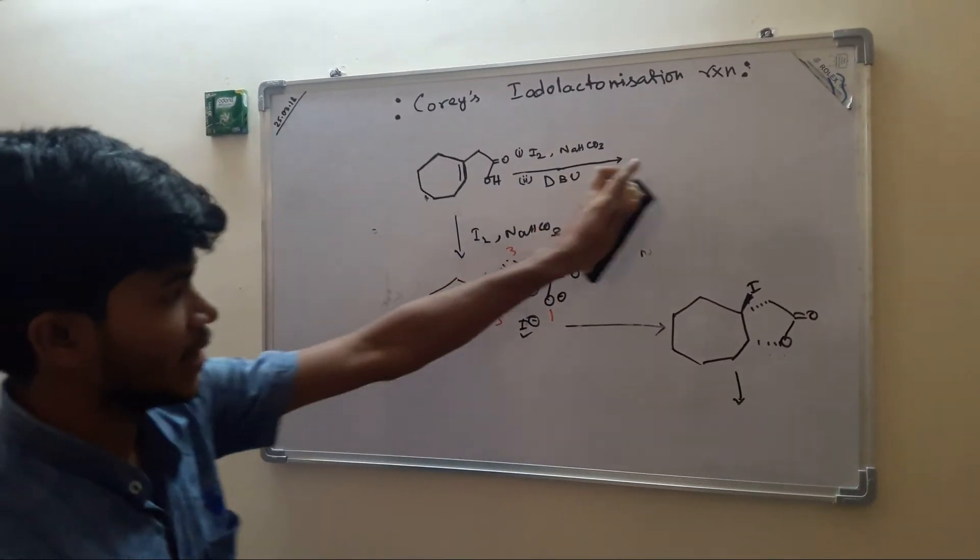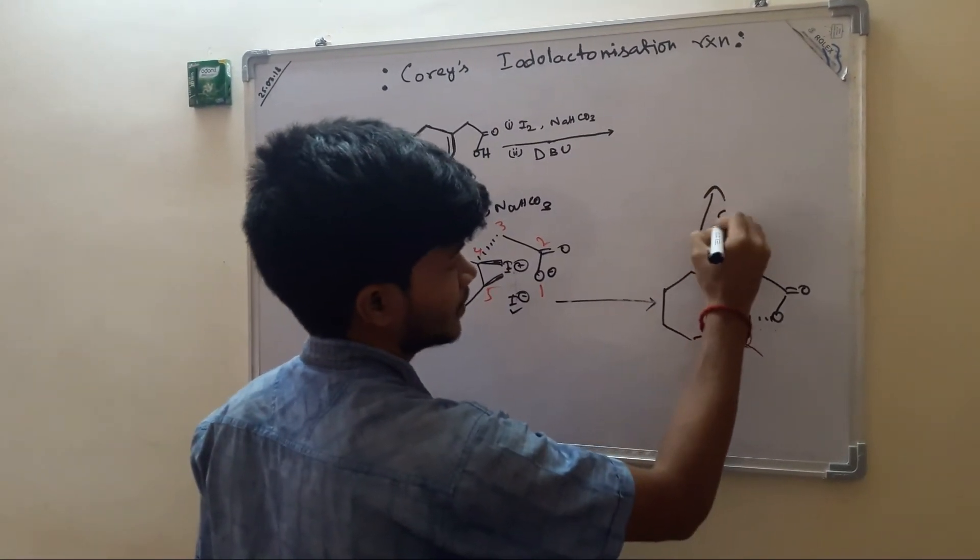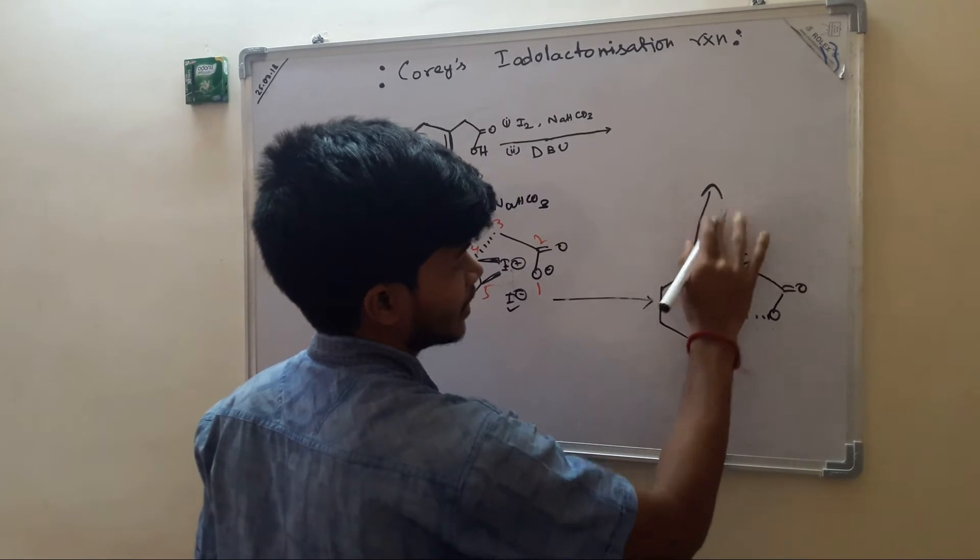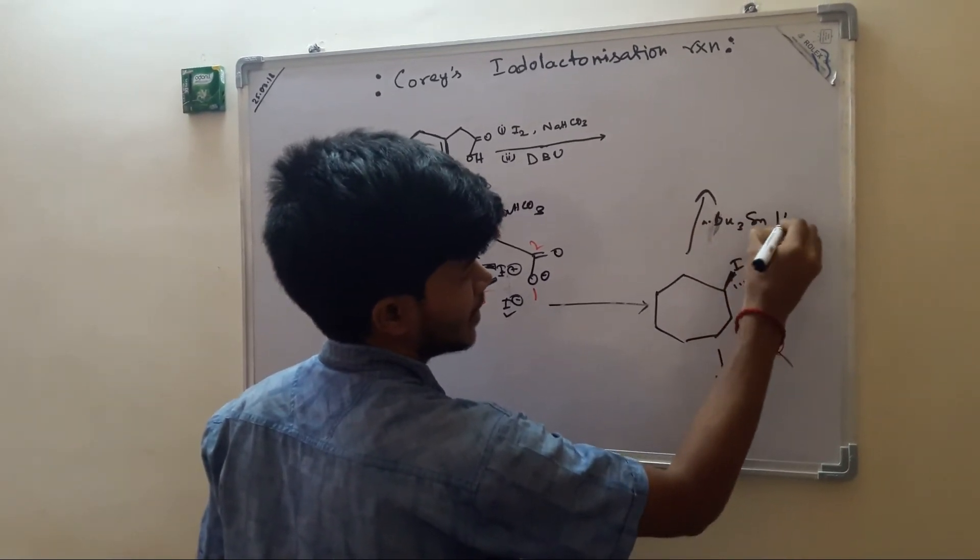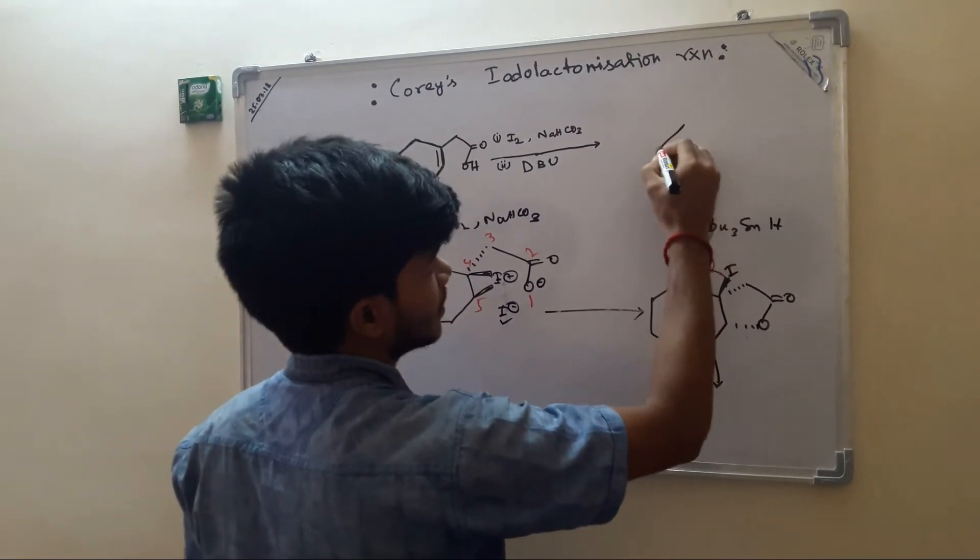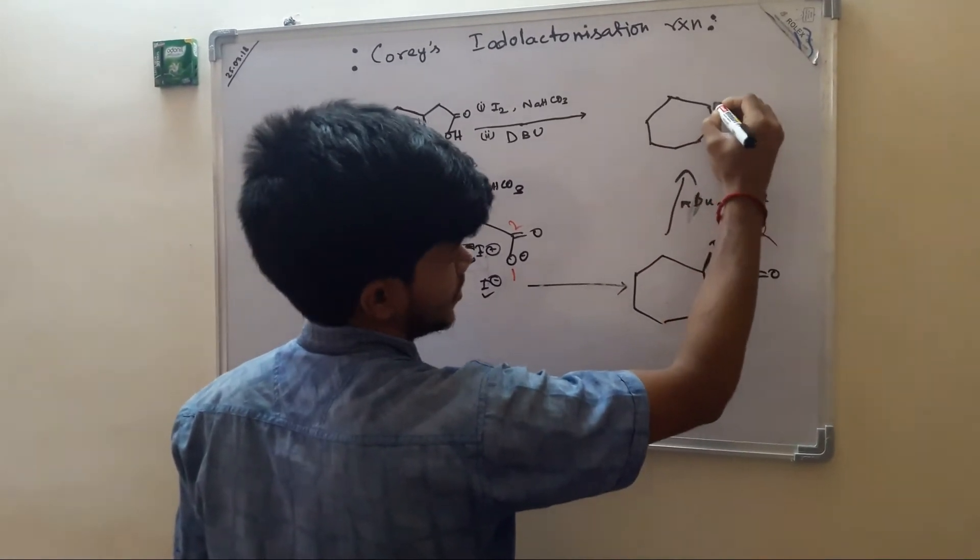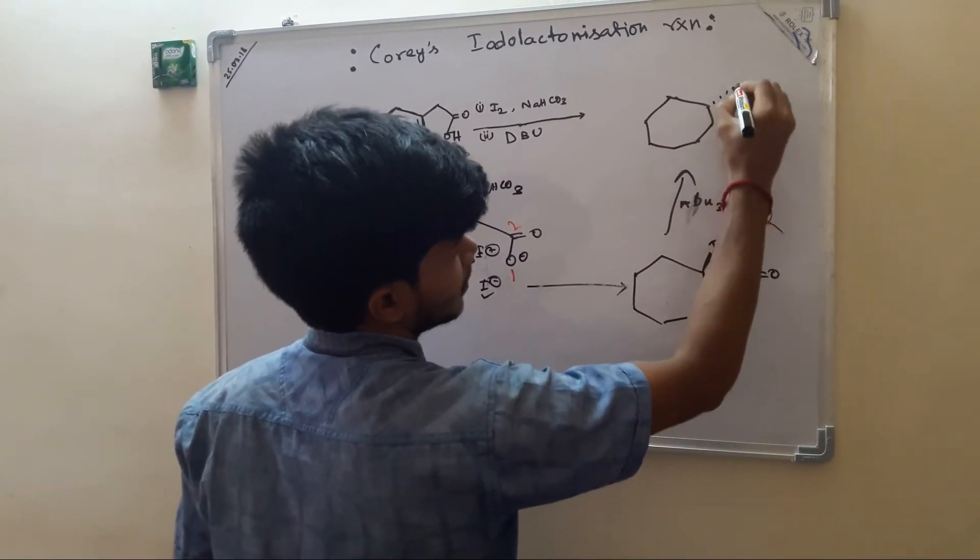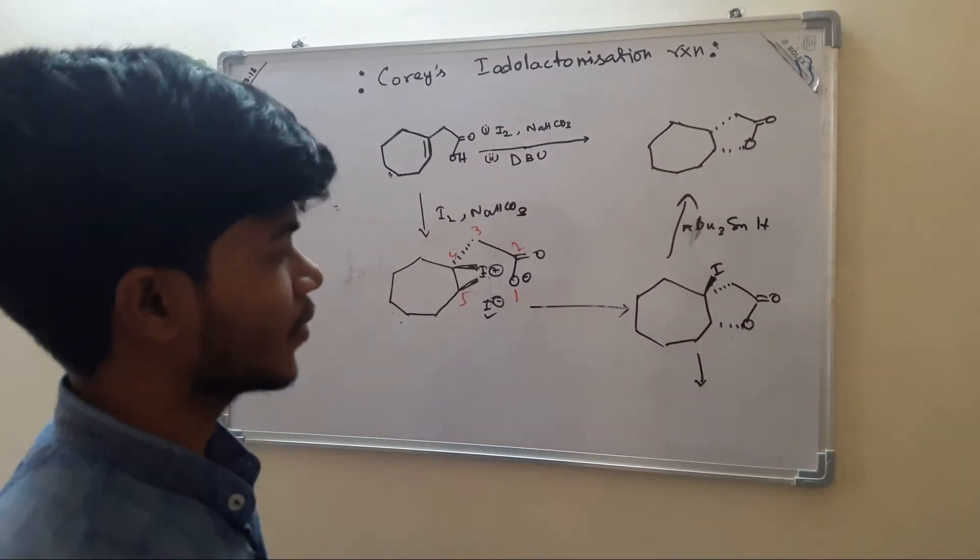From this intermediate, we can carry out several reactions. For example, if we treat with tributyltin hydride, the deiodination will occur. Then we will get this product.